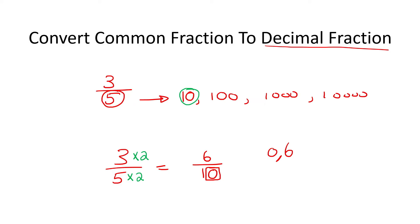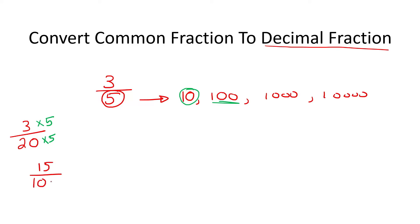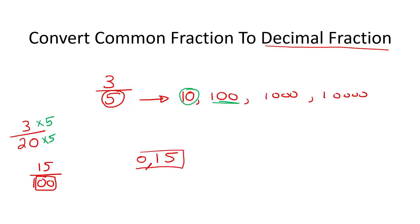Let me show you another one quickly. Say I have 3 over 20. I know that I can change this number to 100 — I just multiply it by 5, but what I do at the bottom I also have to do at the top — and so now I have 15 over 100. Take the number 15, the decimal's at the back, then look at how many zeros you have. You have 2, so move it 2 places back. Put your decimal and fill in a 0, and there's your answer.